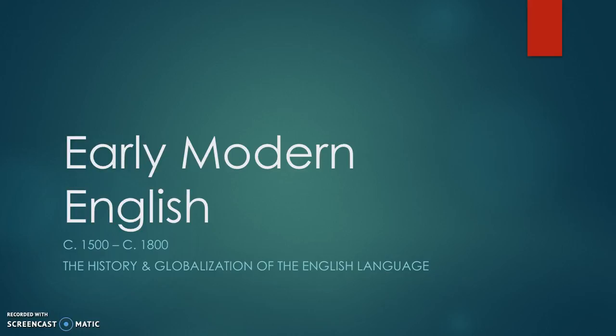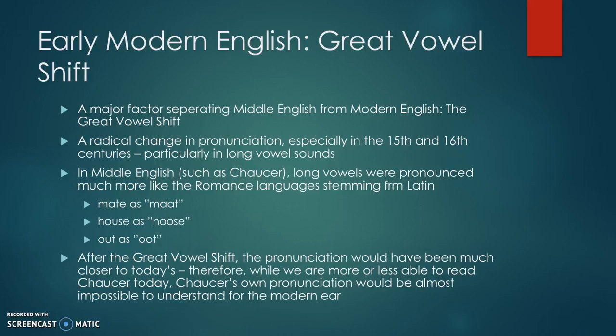A major factor which separates Middle English from Modern English is something called the Great Vowel Shift. It's a huge change in the way words are pronounced, which happened especially in the 15th and 16th centuries. It particularly deals with the long vowel sounds. For example, in the Middle English of Chaucer, the long vowels were pronounced more like other romance languages stemming from Latin — so 'mate' would be pronounced 'matt', 'house' would be pronounced 'hoose'.